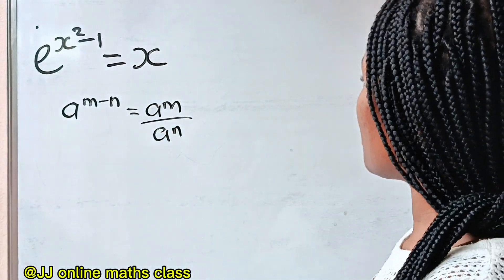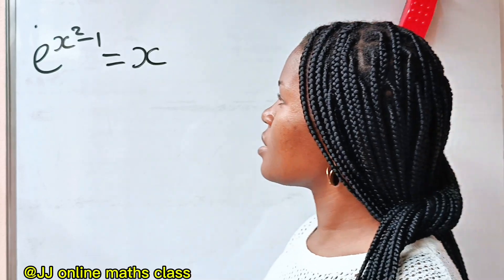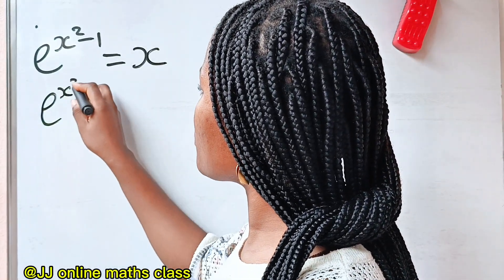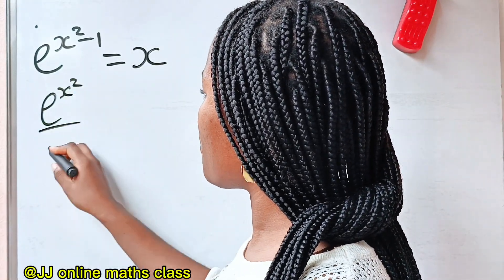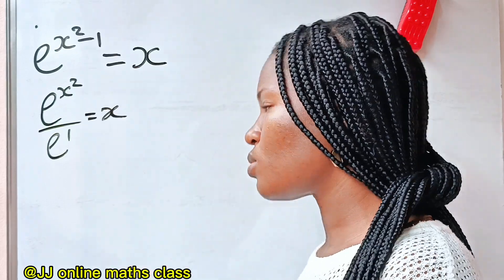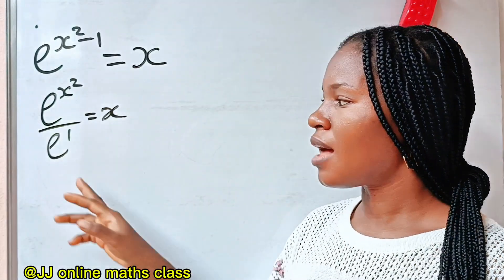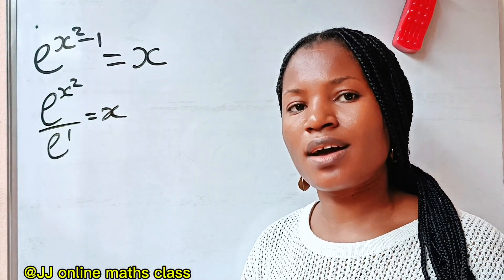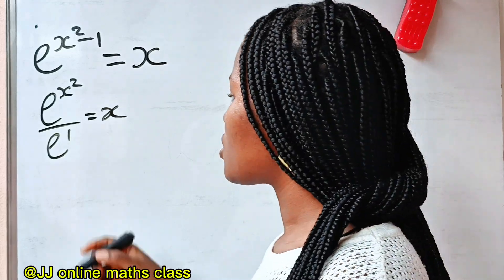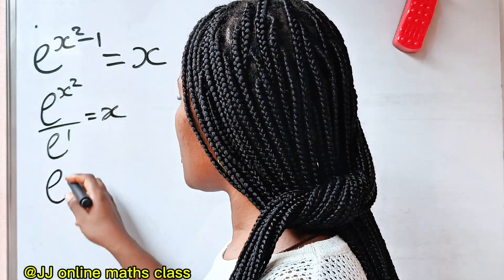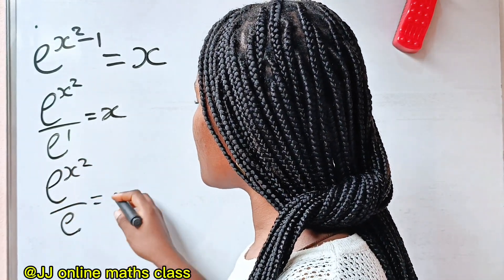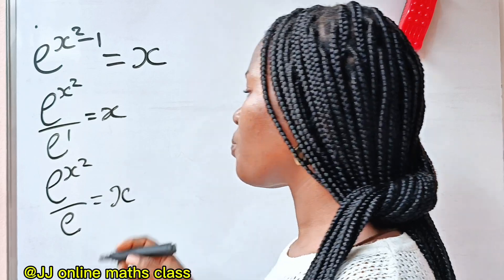That means we can write this as e to the power of x squared divided by e to the power of 1 is equal to x. Anything to the power of 1 is still that thing, so e to the power of 1 is still e. So we write e to the power of x squared divided by e is equal to x.